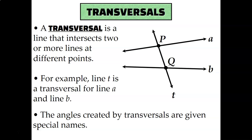I think about transversals like highways. If you think about line T like it's Highway 70, and line A like it's Highway K, and line B like it's TR Hughes — line T is the main highway, the main road that goes through all the other lines. And the angles created by the intersection of these lines each have a special name, so let's learn them.